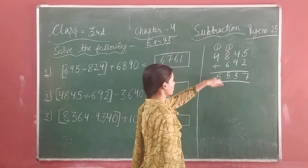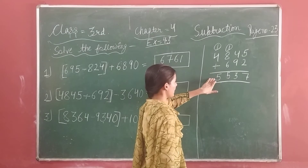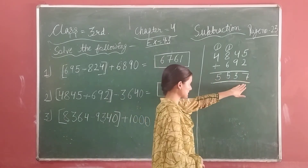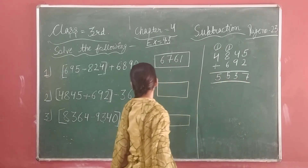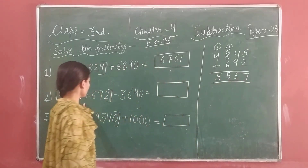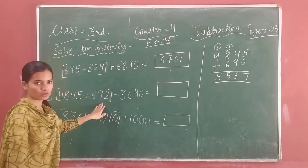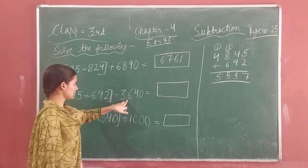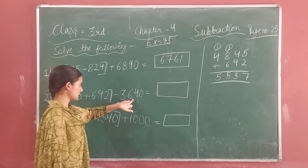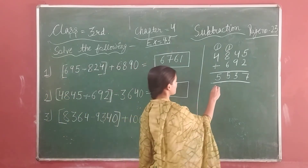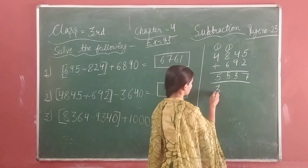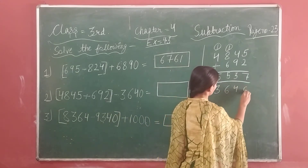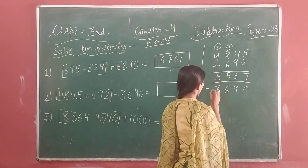So what will happen? 5,513 — 7. Now the answer is 3,640. So the answer is 3,640, and that will be the answer.